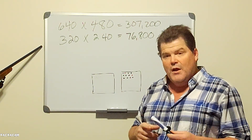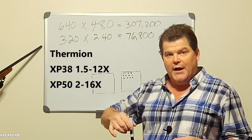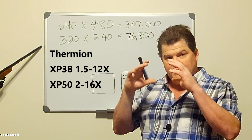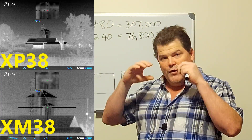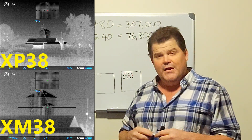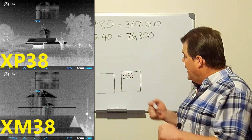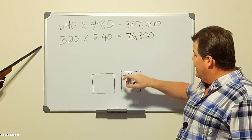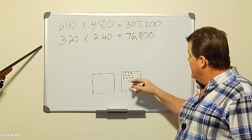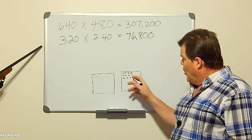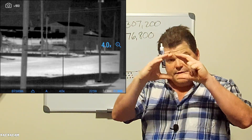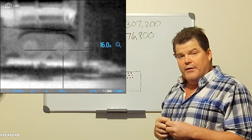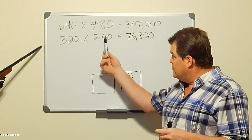As you go up in sensor size — and by that I mean simcell count, not physical sensor size — your resolution and image information goes up, so you're able to produce a better, more resolute image. What you'll typically see is they will start taking the magnification down. Think of it like an old dot matrix printer: if you have 307,200 dots versus 76,800, the larger those dots get as the camera zooms in, the more pixelated your background image becomes.